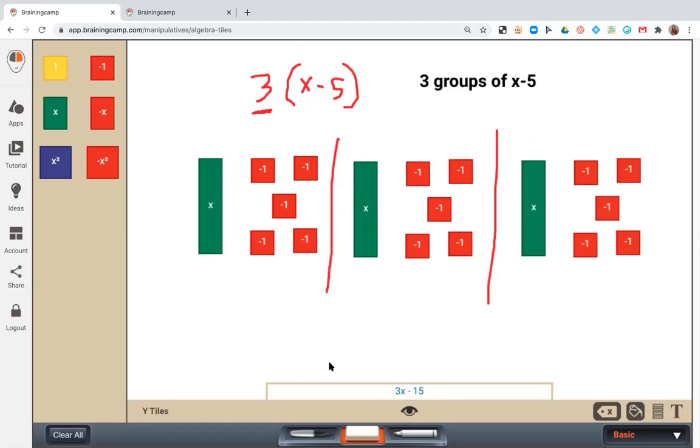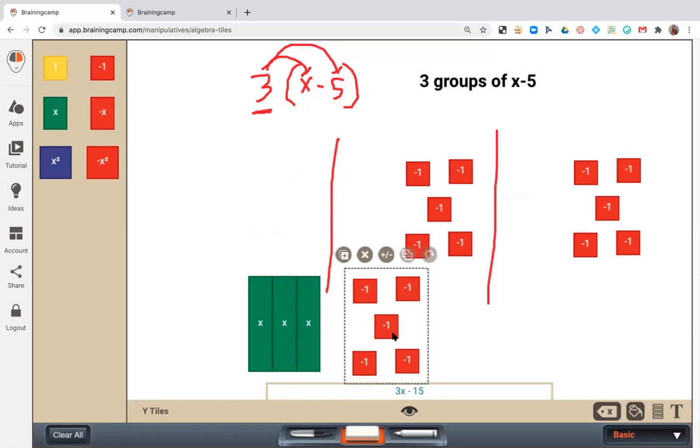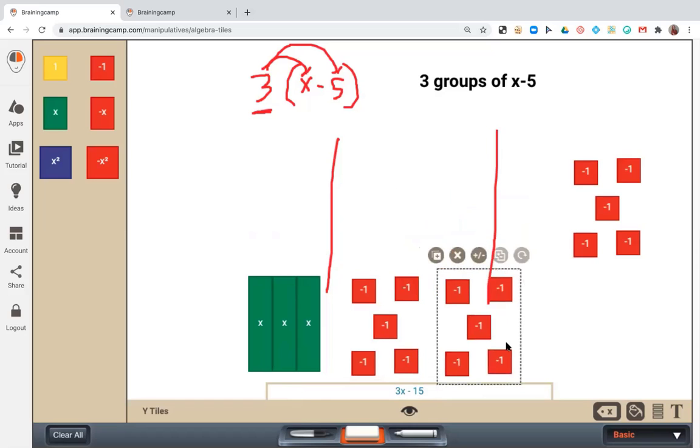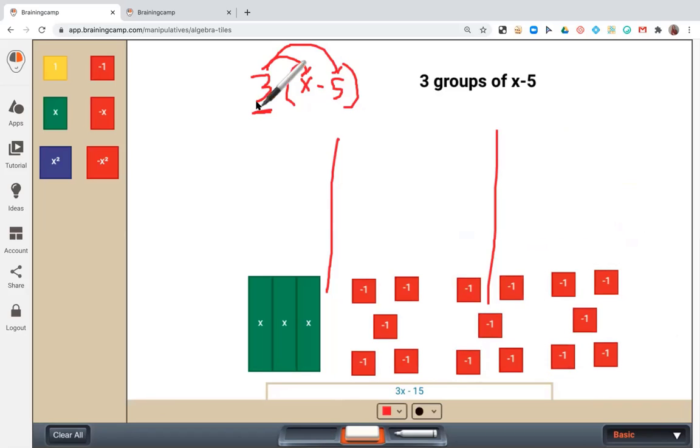So now, what does it look like when we rearrange and combine our like terms here? Well, remember this guy said I need 3 groups of x and I need 3 groups of negative 5. So when we rearrange, we put our like terms together. And now that we have these in patterns, it's really easy to see how many we have. 3 groups of negative 5 and 3 groups of x.